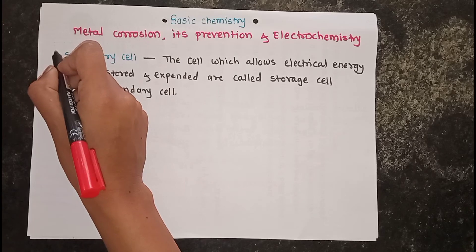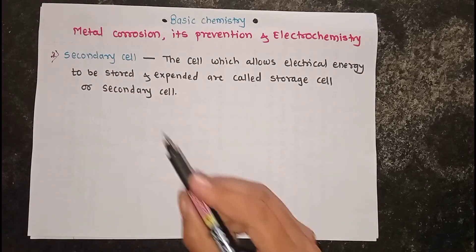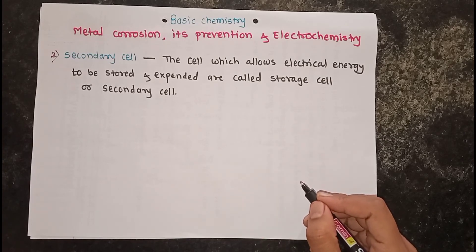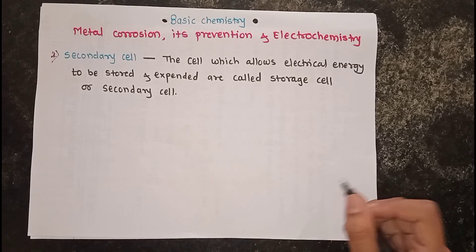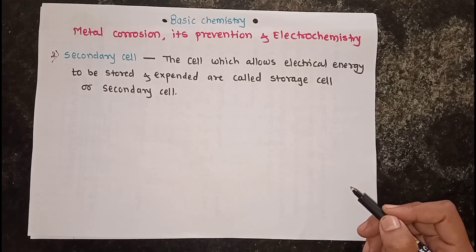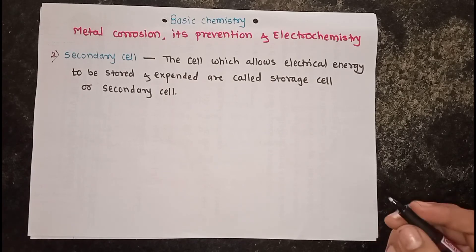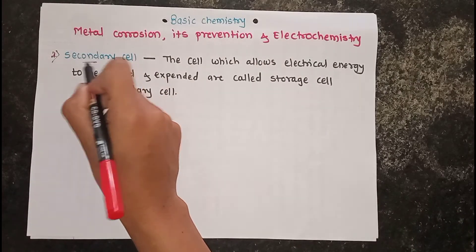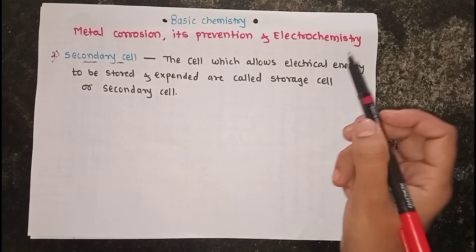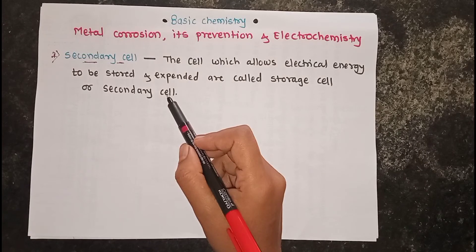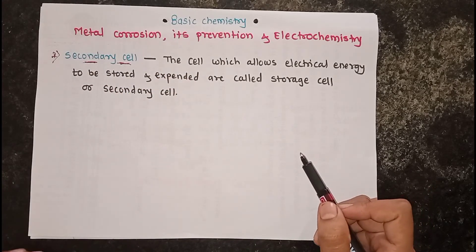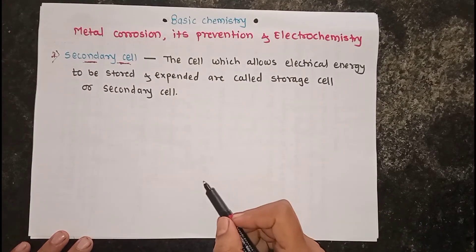The secondary cell is used for the generation of electricity. Electricity cannot be obtained on a large scale by primary cells because when a primary cell is exhausted, it cannot be reused and requires replacement with a new one. Secondary cells are reversible cells in which chemical energy is converted into electrical energy and, in the reverse transformation, electrical energy is converted back into chemical energy.